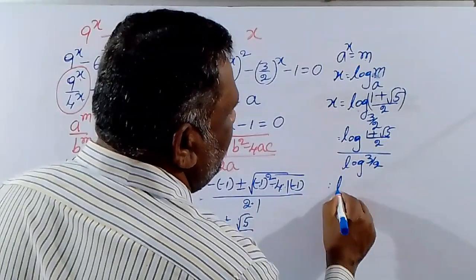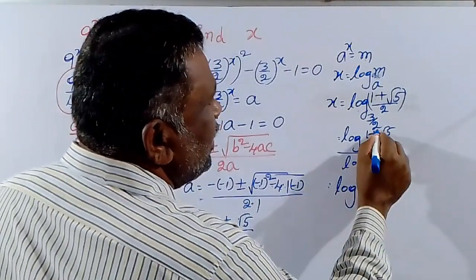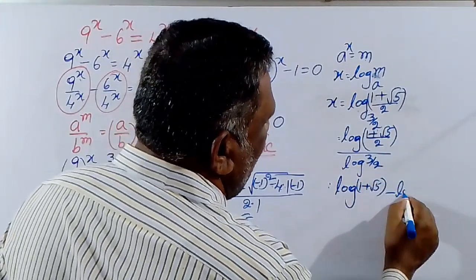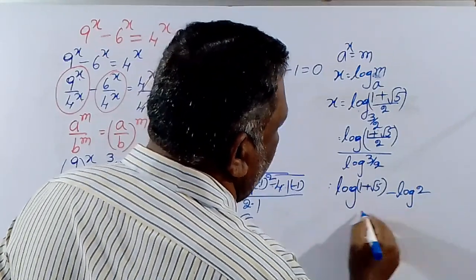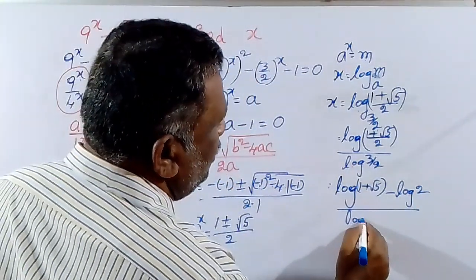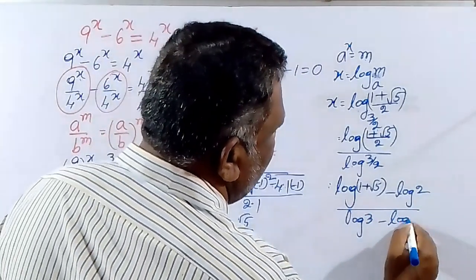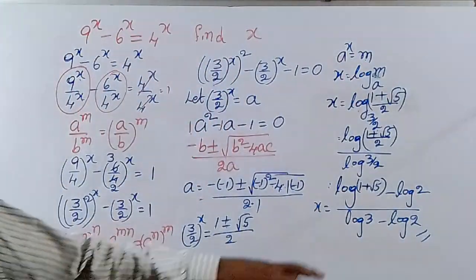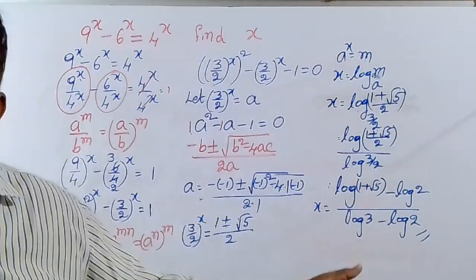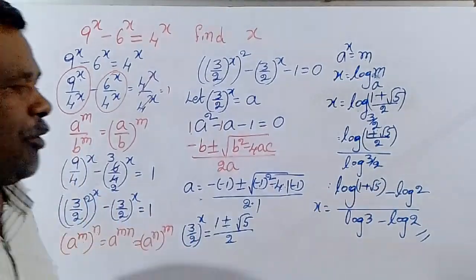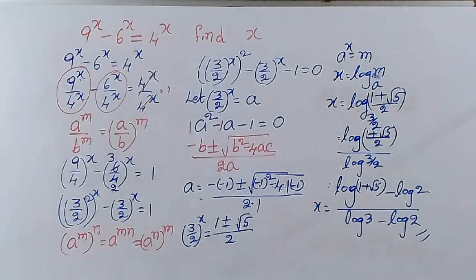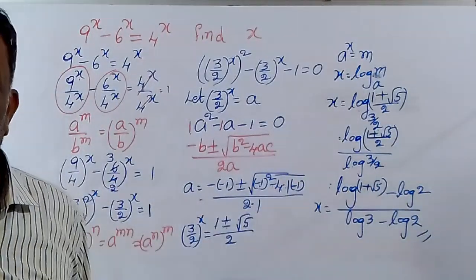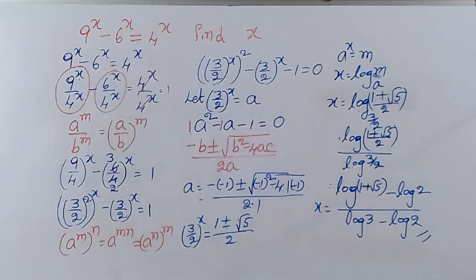We can change log of 1 plus root 5 by 2 as log of 1 plus root 5 minus log 2, and log 3 by 2 as log 3 minus log 2. So x is equal to log of 1 plus root 5 minus log 2, by log 3 minus log 2. That is the value of x.